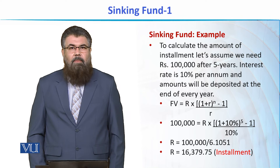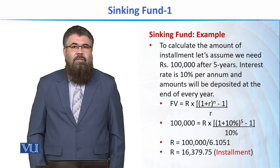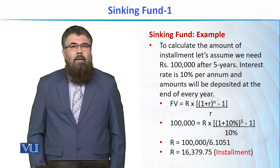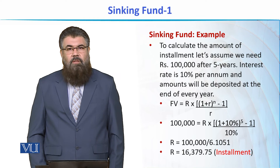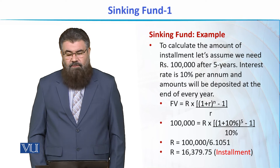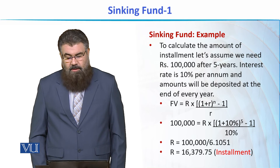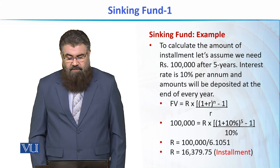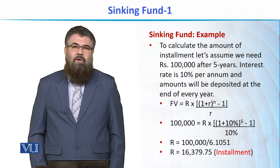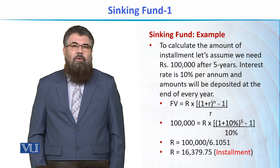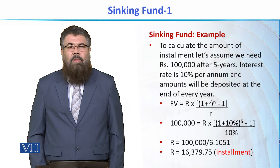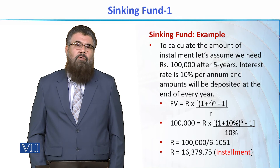We calculate the amount of installment using the future value formula, unlike the amortization schedule which uses the present value formula. For example, suppose we need to accumulate 100,000 rupees after 5 years at 10% per annum interest. Putting these values into the formula, we get an installment amount of 16,379.75 rupees. This means that making this investment over 5 years will give us exactly 100,000 rupees.